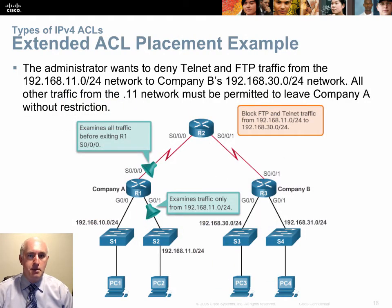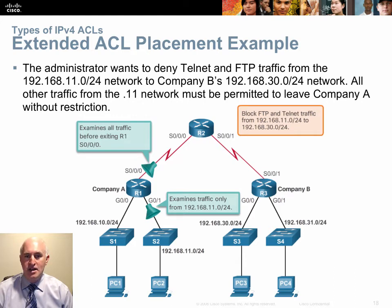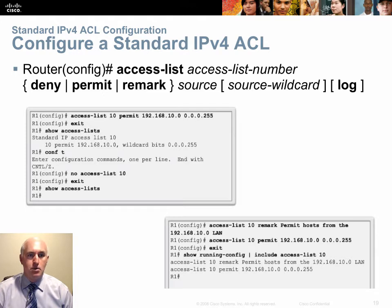With an extended ACL on the same type of scenario, going from the 11.0.0.0 network to the 30.0.0.0 destination, you can place the filter on the ingress interface G0/1 of Router 1 and filter that traffic right away before it's even routed by a single router. With the standard ACL, traffic had to traverse three routers and two WAN links just to be denied. The extended ACL greatly improves efficiency in CPU, RAM, and bandwidth.